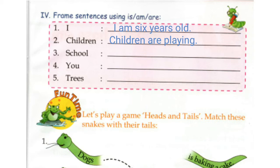Number three: School. School is a singular noun, so we'll use Is. School is a fun place.